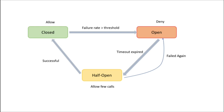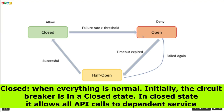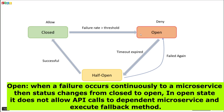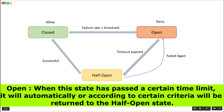There are 3 states of any circuit breaker. First is closed, second is open, and third is half-open. The closed state means the microservice is allowed to call the dependent microservice. The open state occurs when the failure rate of requests is above a particular threshold, and the circuit breaker does not allow calls to the dependent microservice. For example, if 3 out of 5 calls are getting failed or delayed, then the circuit breaker state will become open.